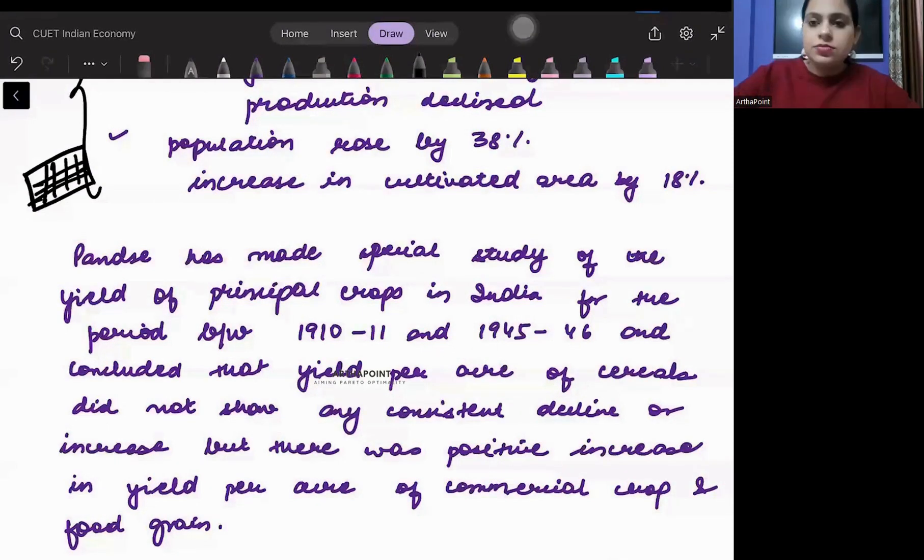Now, what did this mean? Per person land is going to be less, and when per person land will be less, the productivity will automatically be less.